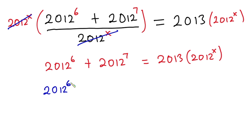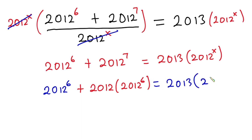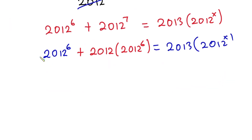Now we have 2012 to the power 6. Let's pay attention to 2012 to the power 7 — I can write this as 2012 times 2012 to the power 6. I'll change my marker. This is equal to 2013 times 2012 to the power x.